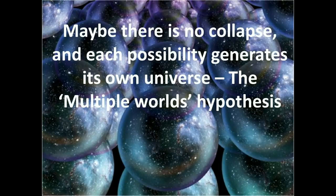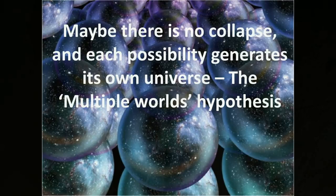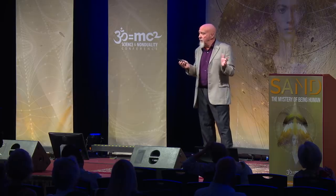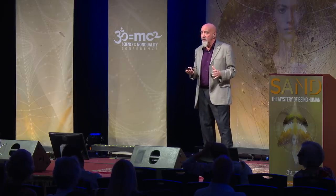Well, maybe there is no collapse. Maybe each possibility generates its own universe. This is the multiple worlds hypothesis. So every time there's a multiple possibility, each possibility evolves and forms its own world, and we have this infinite number of overlapping worlds. And this is a very popular belief among physicists and others. But it's untestable, and in my opinion, silly,